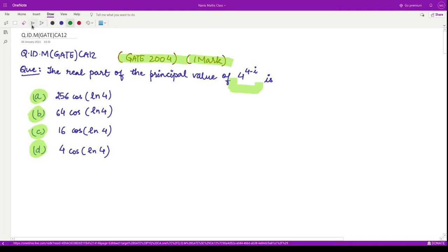So what we need to do is simplify this function. Let the complex number z equal 4 raised to power 4 minus iota.